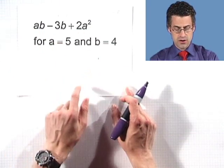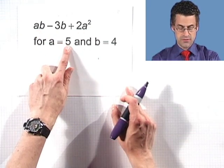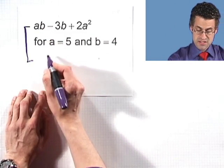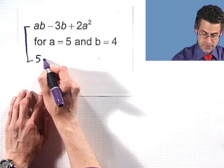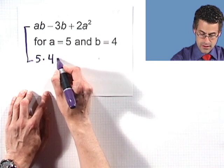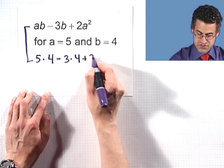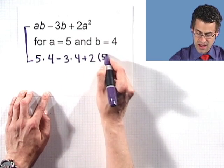So here I've got two unknowns and I'm going to insert for the first one five, and for the b, four. Let's see what that equals in this special case. So in the special case, I see five times four minus three times four plus two times five squared.